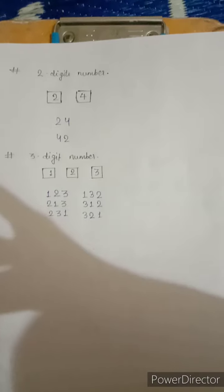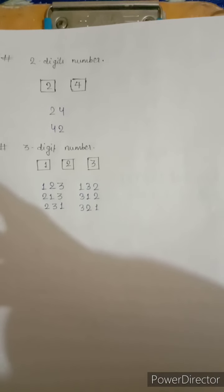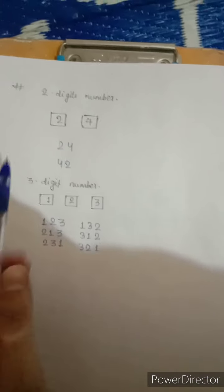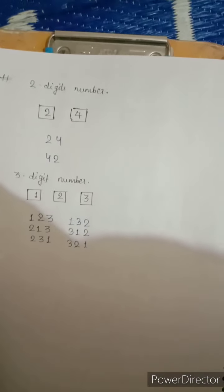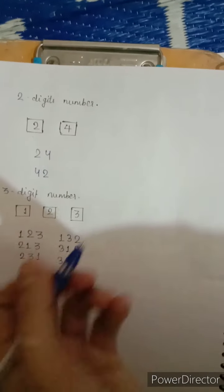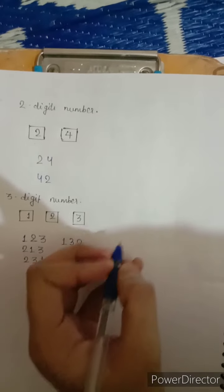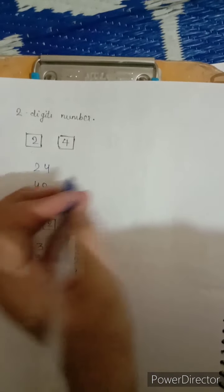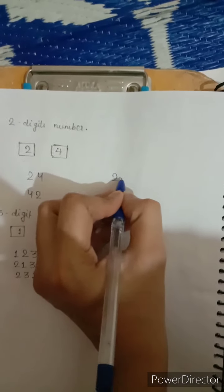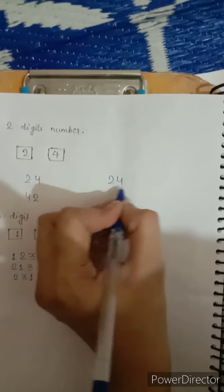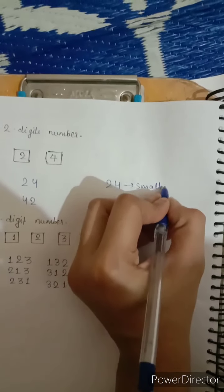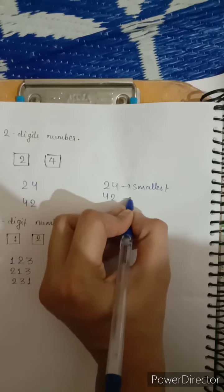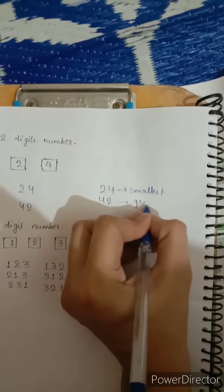Now we have to find the smallest and the greatest number. In a two-digit number, that's quite simple. For making the smallest number, we put the smallest digit first — so we put two first then four, and that is the smallest number. When we put the greatest digit first and then the smallest digit second, that is the greatest number.